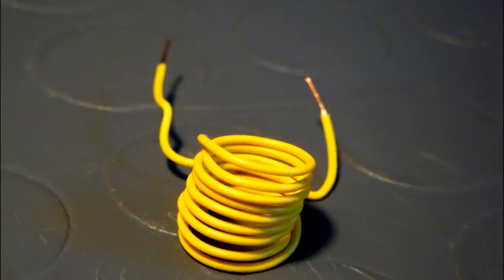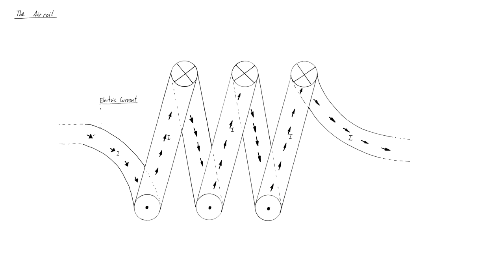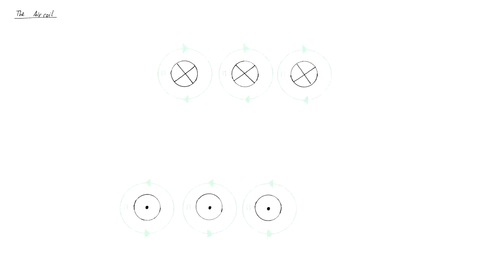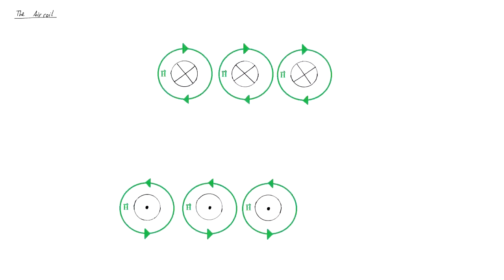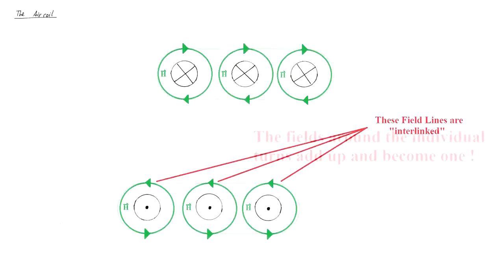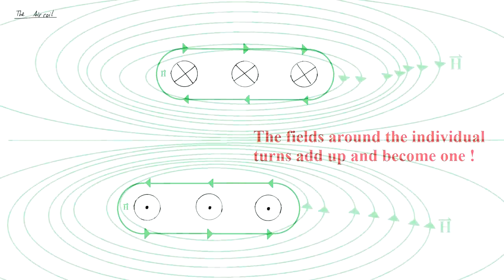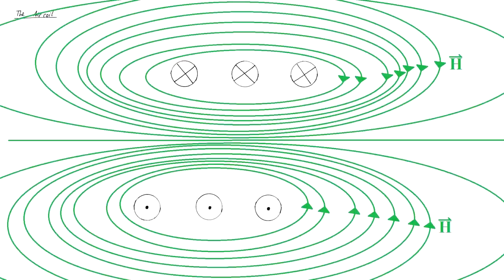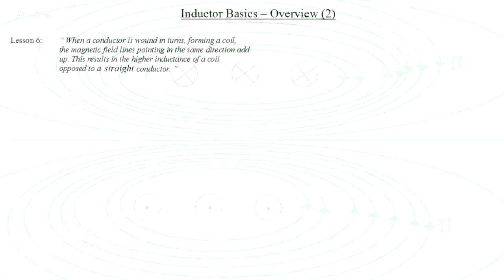So, how can all this be explained? The first thing to explain would be why the inductance of a wound air coil is higher than that of a straight piece of copper wire. Like in the case of the twisted pair, it helps to make a drawing here. In the cross section of the coil, we can see that the magnetic field lines created around the wire point all in the same direction inside as well as outside the coil. The field lines are interlinked. And just as the magnetic fields of the twisted pair cancel each other out, the magnetic fields of the coil add up. Therefore, we can formulate lesson 6. When a conductor is wound in turns forming a coil, the magnetic field lines pointing in the same direction add up. This results in the higher inductance of a coil opposed to a straight conductor.